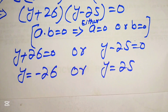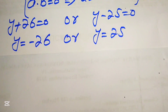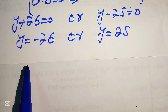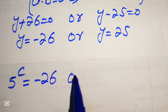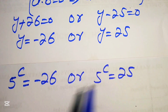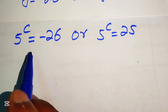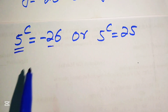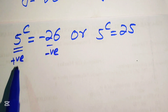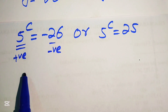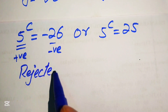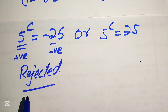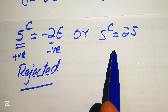We have two values of y, but our goal is to find C. Substituting back y equals 5 to the power of C, we get 5^C equals minus 26 or 5^C equals 25. Since an exponential function always gives a positive value, 5^C equals minus 26 is not possible, so we reject that case and proceed with 5^C equals 25 only.